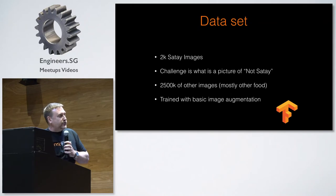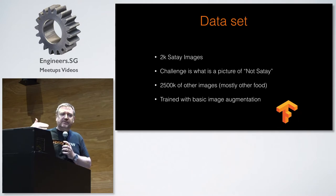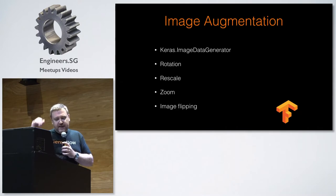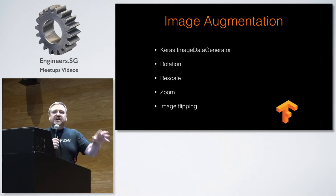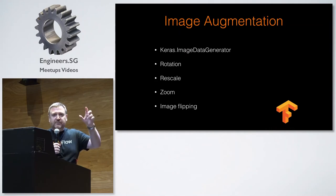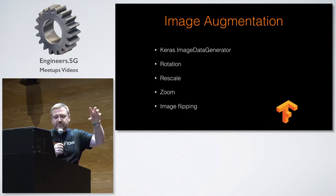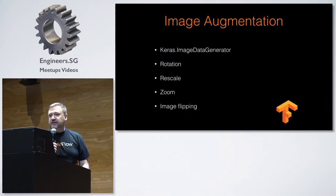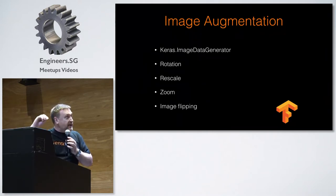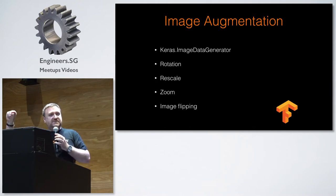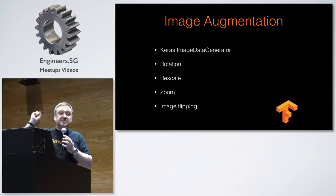One of the big things you're going to do is train it with basic image augmentation. In Keras, this is very easy — you just use an ImageDataGenerator. You tell it that each time you load these images, you want to randomly rotate them, randomly rescale them, randomly zoom in a bit, randomly flip the image. This allows you to take a small dataset of 2,000 images and effectively turn it into a lot more by sampling and transforming. You can define how many batches you want.